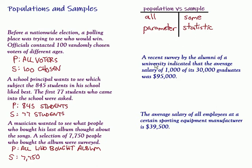A recent survey by the alumni of a university indicated that the average salary of 1,000 of its 30,000 graduates was $95,000. So, look for some of those keywords that tell us where this information is coming from. Is it coming from all of the members of the population or from just some? Well, look at this word right here: survey. And then right here it says 1,000 of its 30,000 graduates.